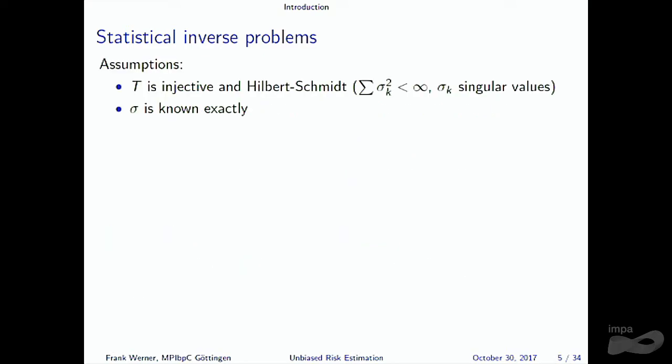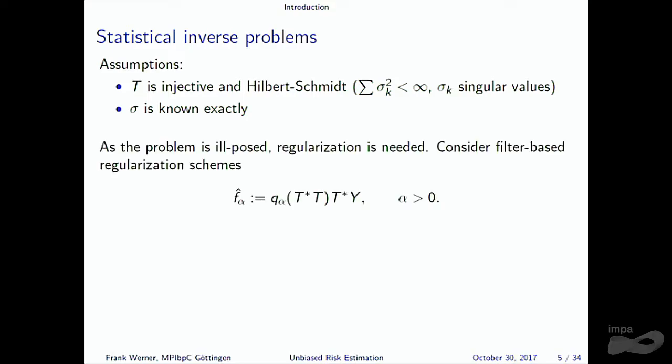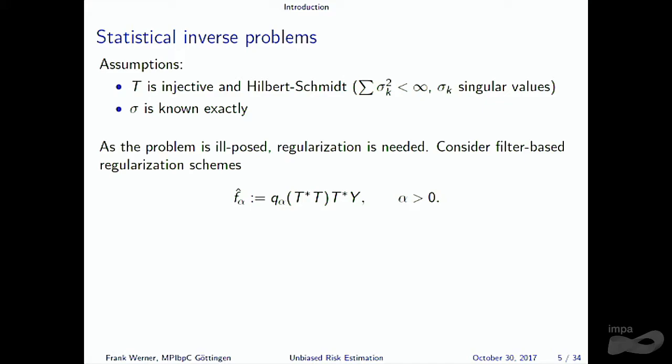I assume T is injective and a Hilbert-Schmidt operator, so the singular values σ_k are square summable. I also assume the noise level σ is known exactly. In that case, I can use filter-based regularization schemes: for a filter function Q_α, I consider estimators F̂_α = Q_α(T*T) T* Y. This is well-defined because T is Hilbert-Schmidt. The key question remaining is how to choose α — I want a data-driven, a posteriori choice rule such that as σ → 0, I still get the optimal rate of convergence.